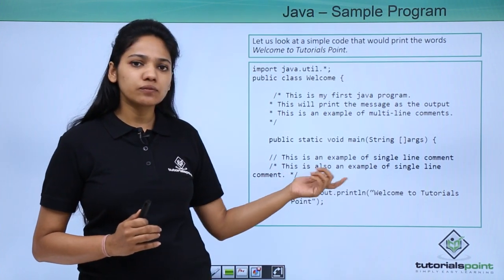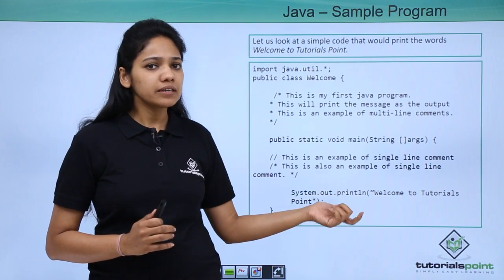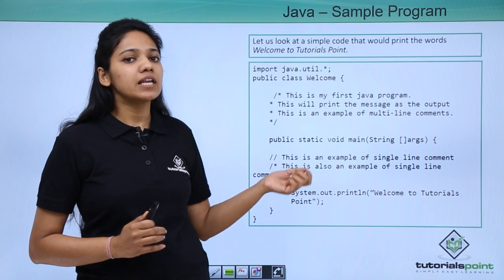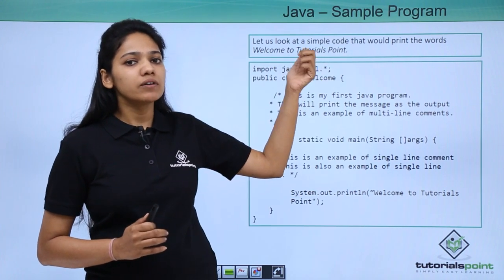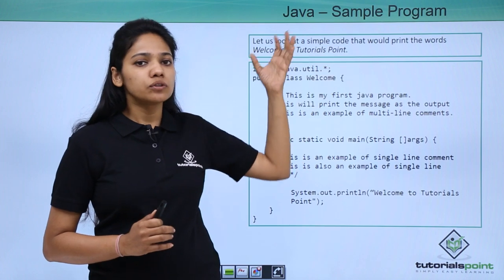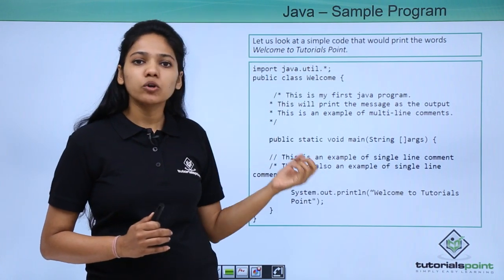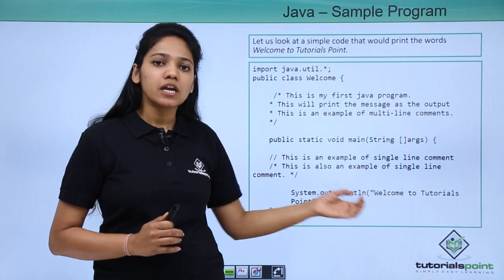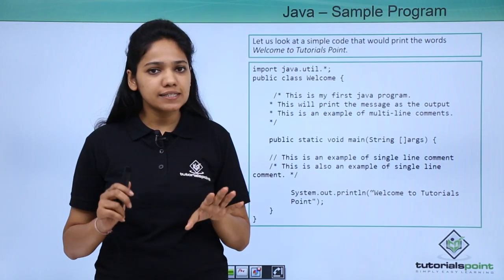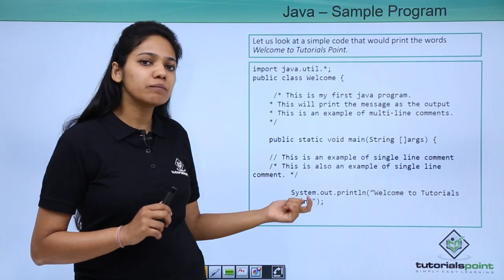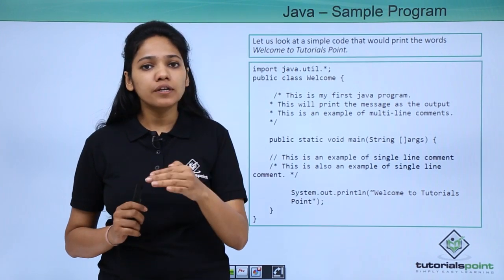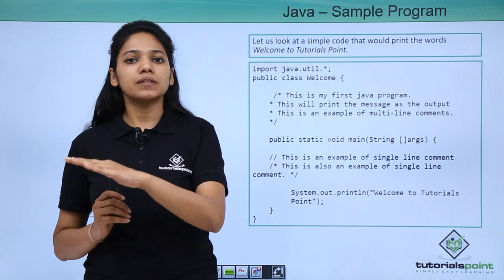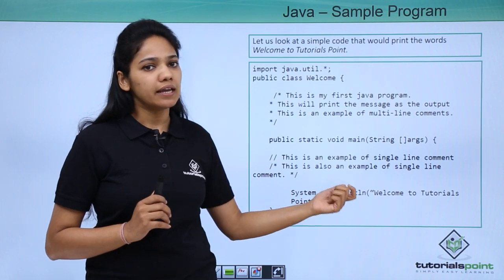System is a class, out is a member of the System class, and println is a method available from a package called java.io. These classes are provided from a class called PrintStream. Each of them helps you print the message. If you want to print a message in a single line, you can use system.out.print, but if you want a new line after the statement, you need to use println.